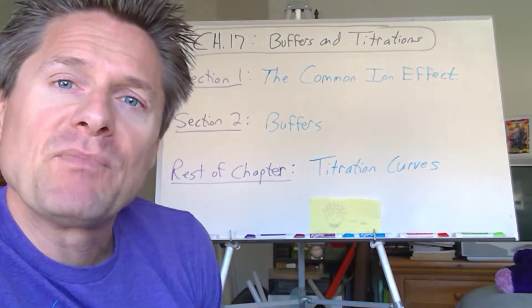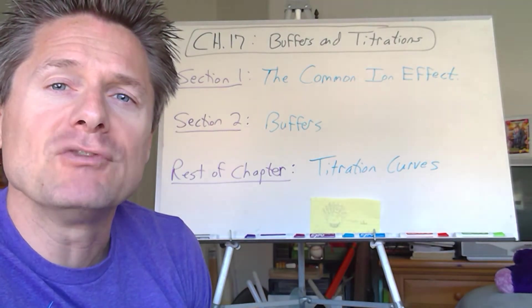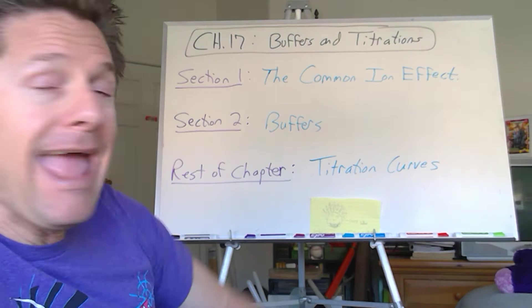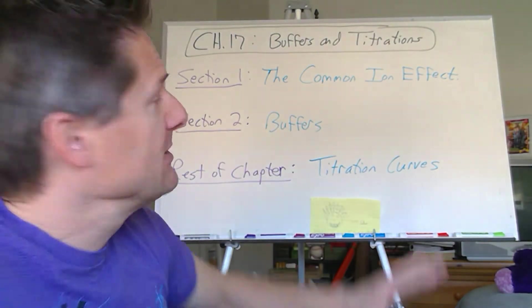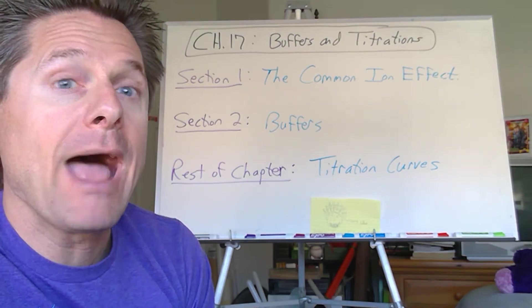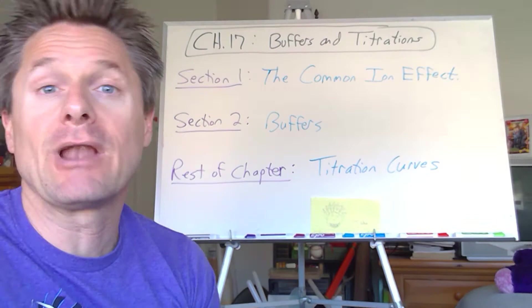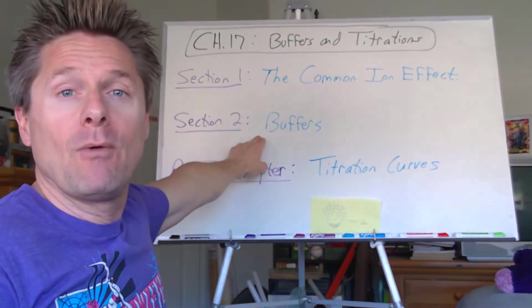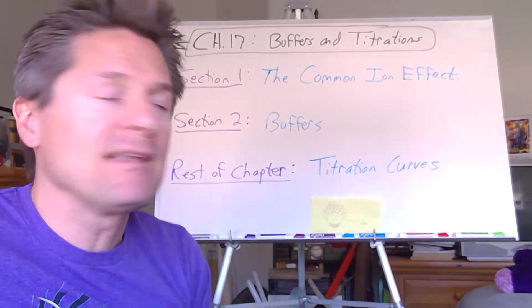I'll do one quick video on the common ion effect, but I'll do a problem on it to just kind of review ice tables and whatnot, to show you how this common ion effect really affects the ionization of acids and bases. Section two, we're going to hit buffers. That was kind of a weird one for me when I was a general chemistry student. It took me a while for my brain to wrap around it. But once you get it, it's pretty important.